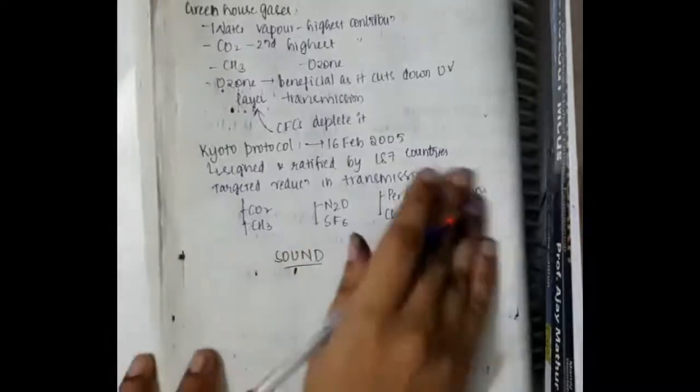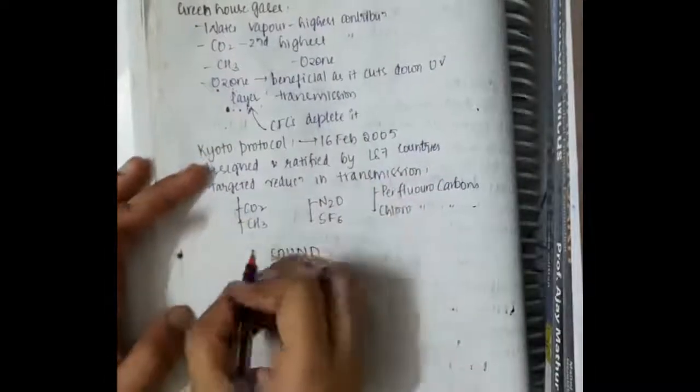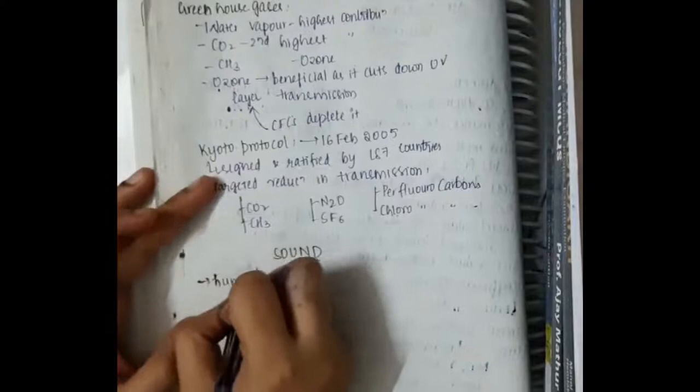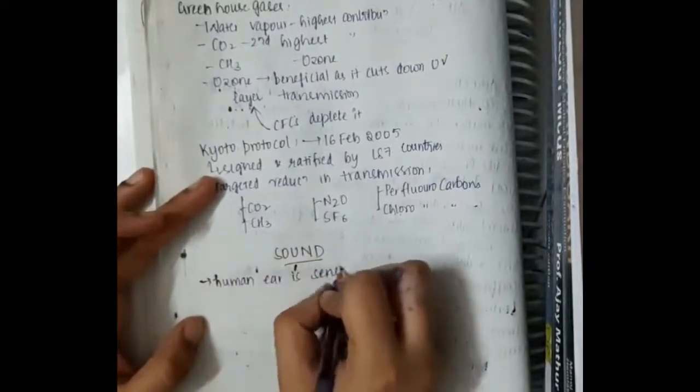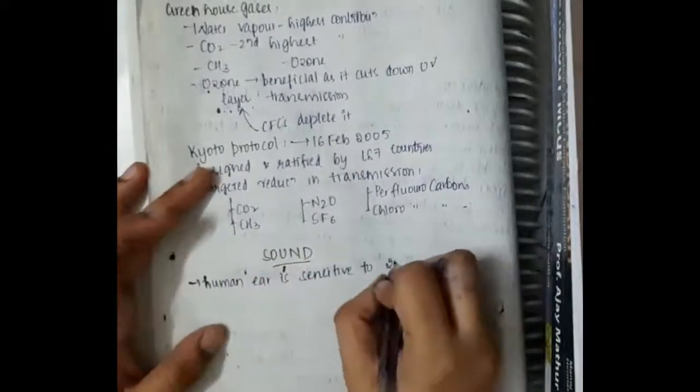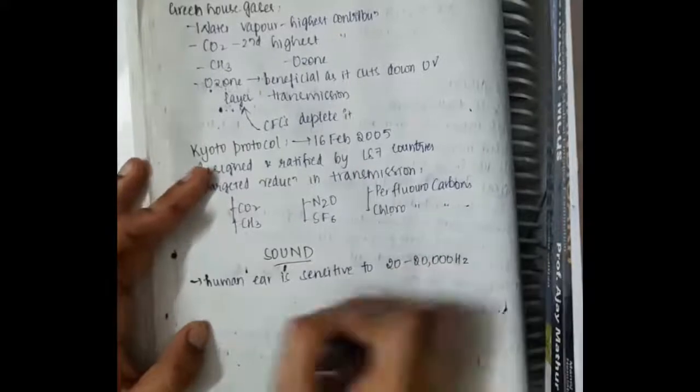Hello friends, let us now learn some important points about sound. Human ear is sensitive to 20 to 20,000 Hz.